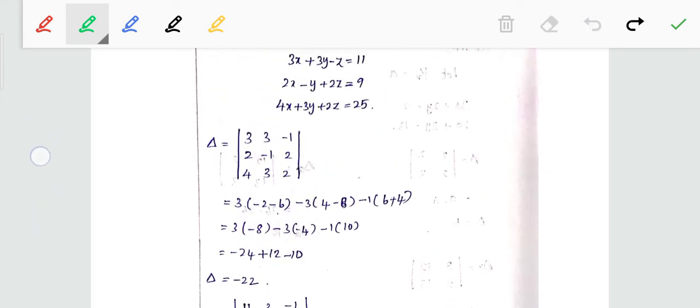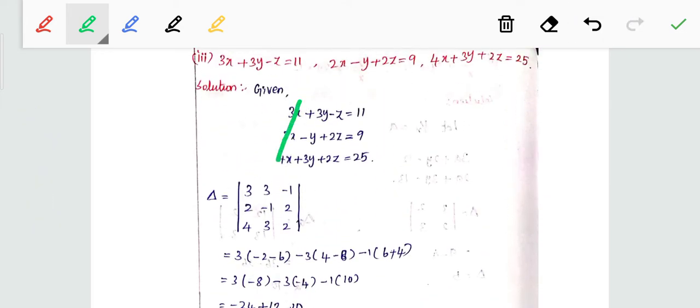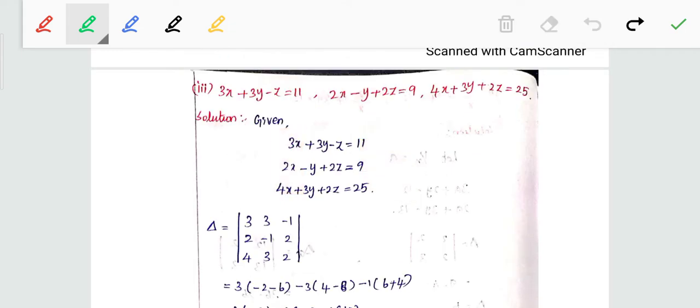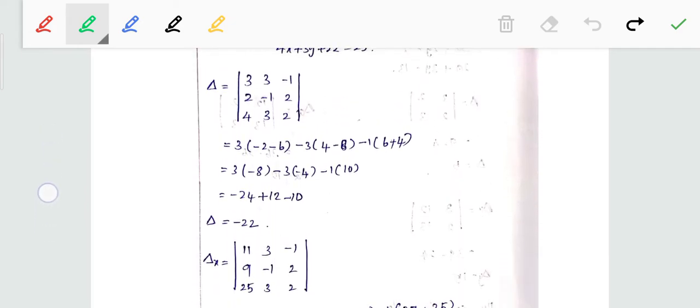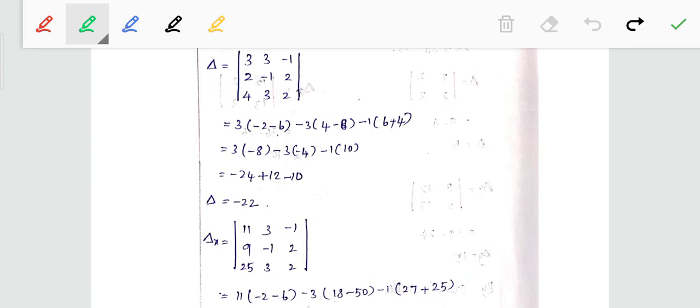Next is del x. Del x: in the x coefficient set the other values 11, 9, 25. So 11, 9, 25; 3, minus 1, 3; minus 1, 2, 2. The y variable, z variable are in the rows.